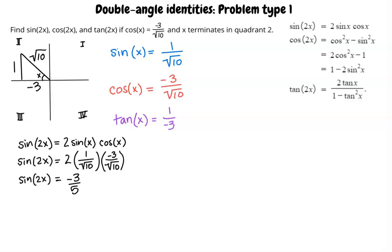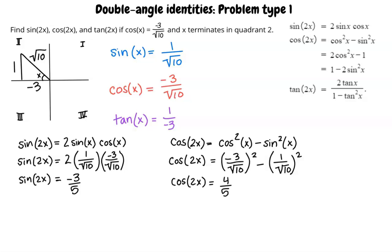We have three different identities to use for the double angle identity of cosine. All will lead us to the same answer. So, feel free to use your favorite. We will use the first one for this example. Cosine of 2x equals cosine squared of x minus sine squared of x. Substituting cosine and sine, we write negative 3 over square root of 10 squared minus 1 over square root of 10 squared, which simplifies to 4 over 5.